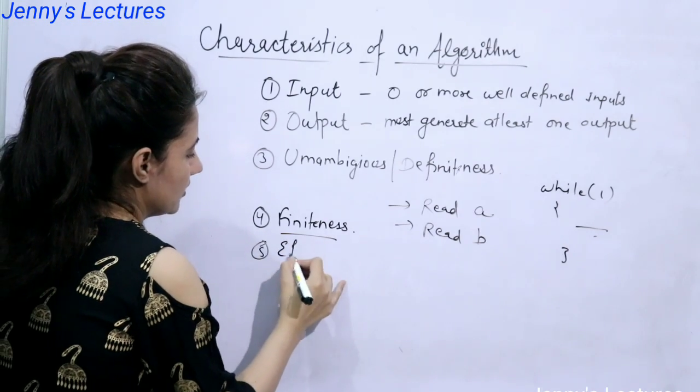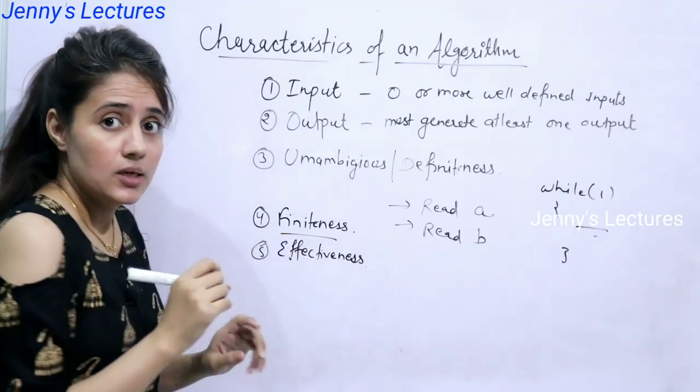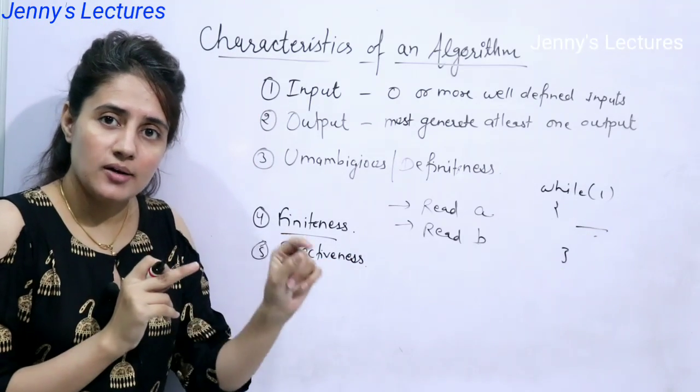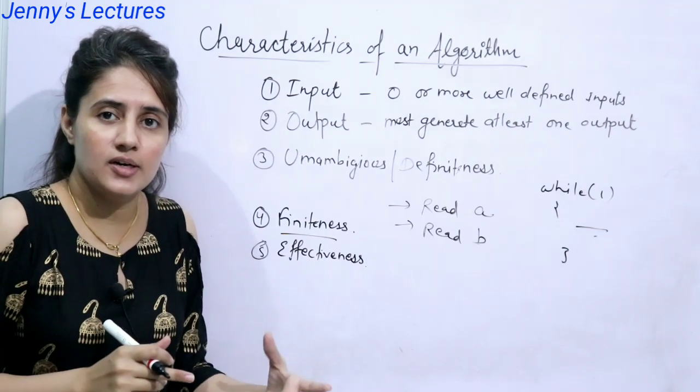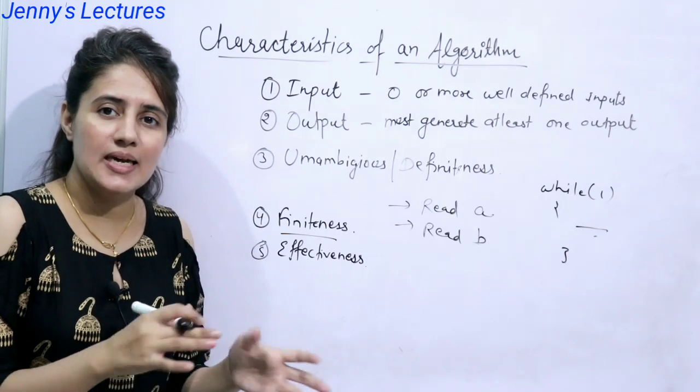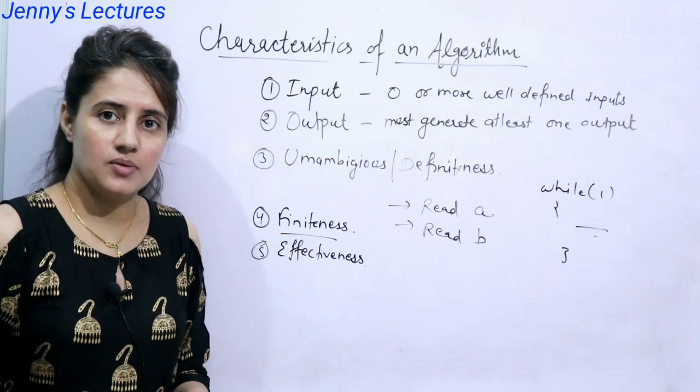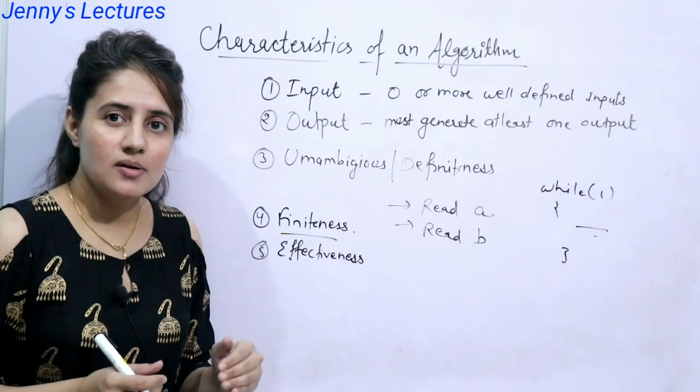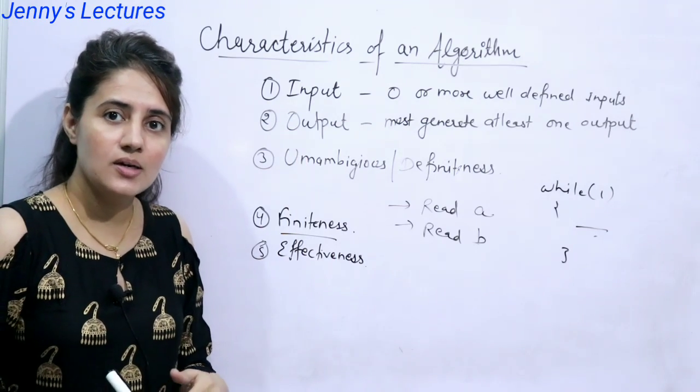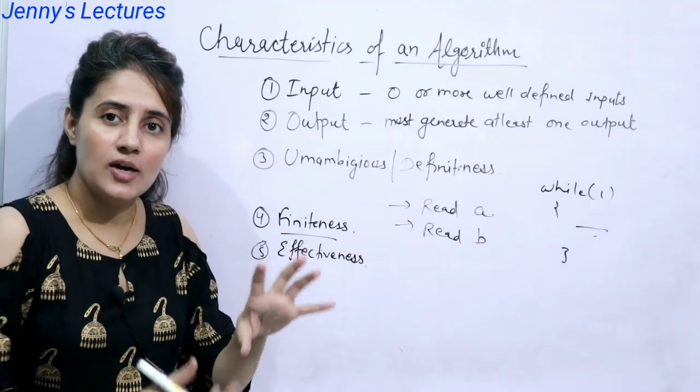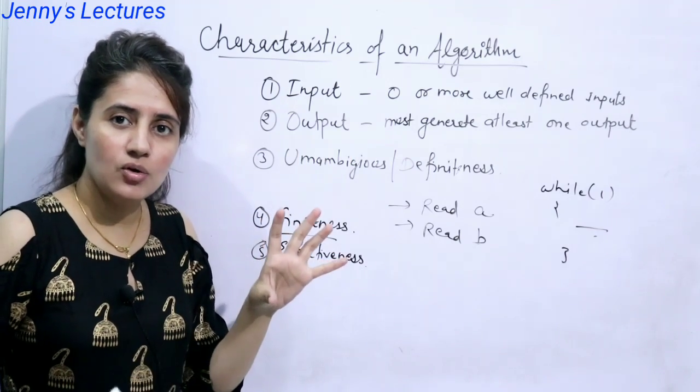Next one is effectiveness means it should perform that task for which you have written that algorithm. It should be effective. It shouldn't contain any unnecessary statements. Like the same example that algorithm for tea is what four or five number of steps. But those steps are effective, ultimately you will get an output, ultimately you will get tea.